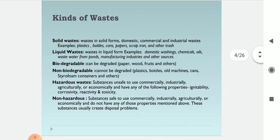What are the kinds of wastes? First, solid wastes — that is waste in solid forms: domestic, commercial, and industrial wastes. Examples include plastics, bottles, cans, papers, scrap iron, and other trash. These come under solid waste.